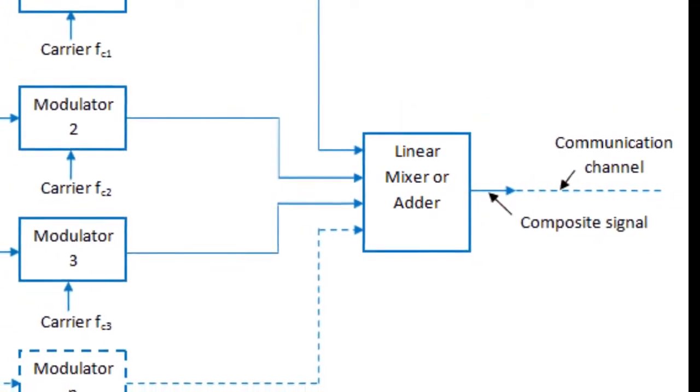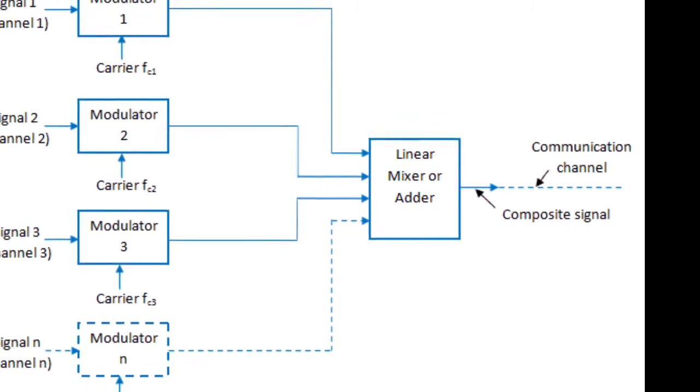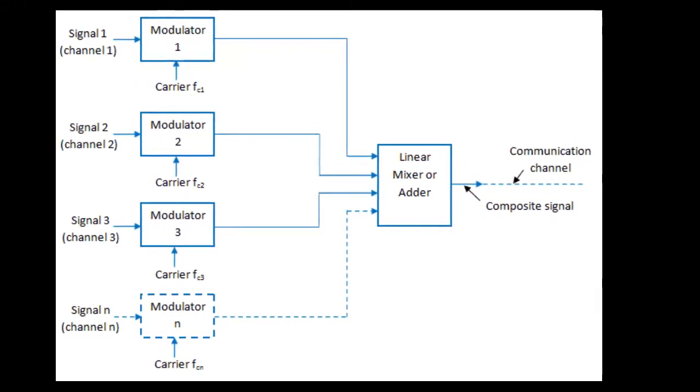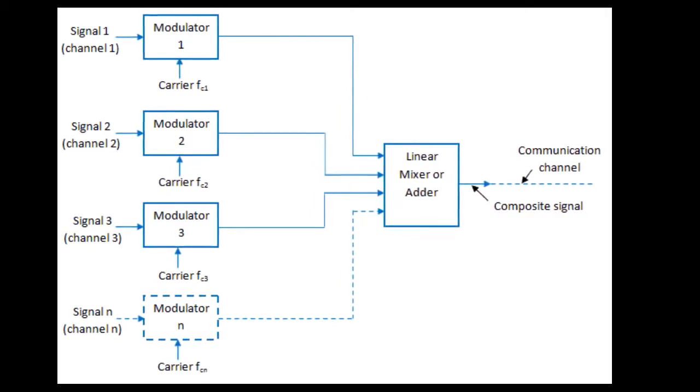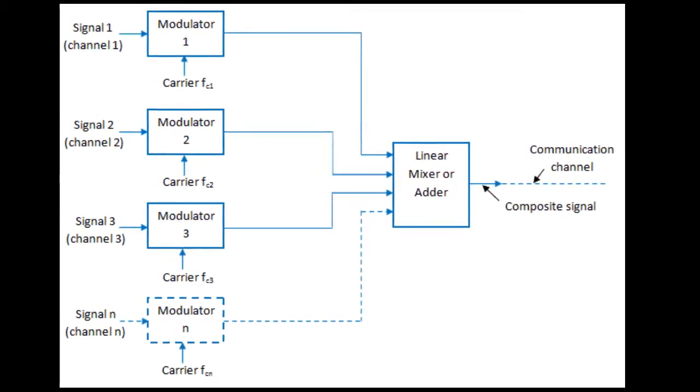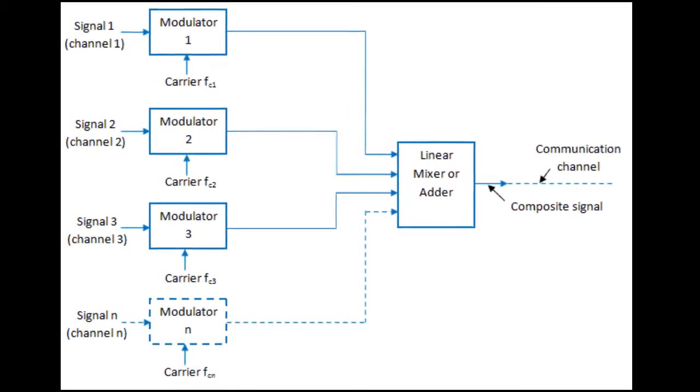Frequency division multiplexing can be used in both wired and wireless networking for transmitting large amounts of data at high speeds. It is the simplest and oldest form of multiplexing in wireless networking technology.